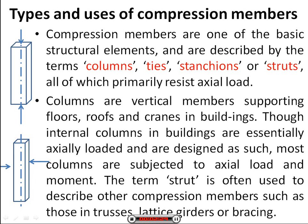Columns are vertical members supporting floors, roofs and cranes in buildings. Though internal columns in buildings are essentially axially loaded and are designed as such, most columns are subjected to axial load and moment, as we can see in this figure. A laterally loaded member cannot be considered as a column. The term struts is often used to describe other compression members, such as those in trusses, lattice girders or bracing.